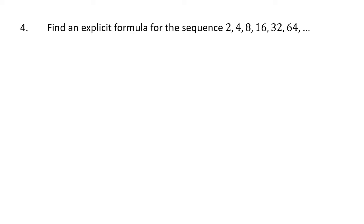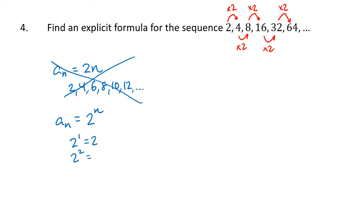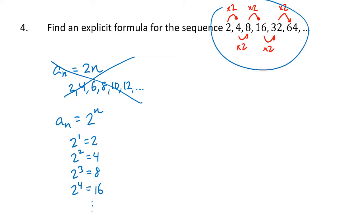What about a problem like this? The pattern this time — 2, 4, 8, 16 — it looks like the number we're adding is different each time, but the pattern is actually that we're doubling: multiplying by 2 each time. A common wrong answer would be 2 times n, but as we saw, that gives numbers that add 2 each time, not double. To achieve doubling, we need exponentiation — we need a pattern like 2 to the n. And in fact that's exactly the formula: 2 to the first power is 2, 2 to the second power is 4, 2 to the third power is 8. The exponent going up by 1 each time is what achieves the doubling pattern.